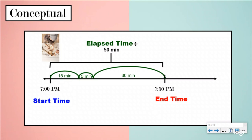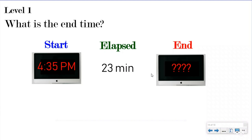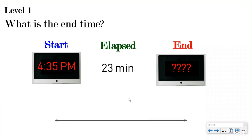So now we have a visual understanding of our three mathcabulary words: start time, elapsed time, and end time. In elapsed time problems, you always have three parts and they always give you two out of three. Today they give you the start time and elapsed time, and you find the end time. Next lesson they give start and end time to find elapsed time. After that, they give elapsed and end time to find start time. The same strategy - a number line - works for all of them.